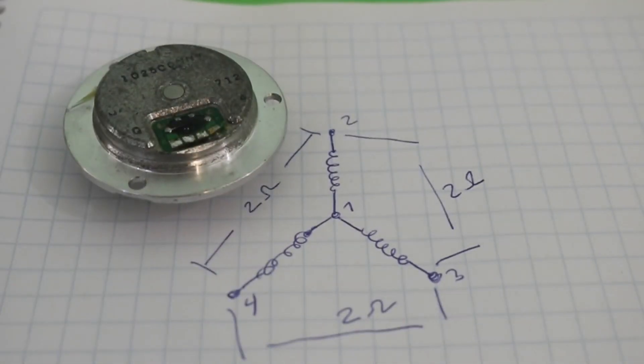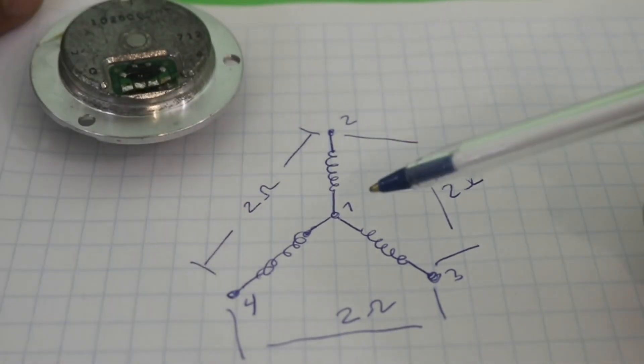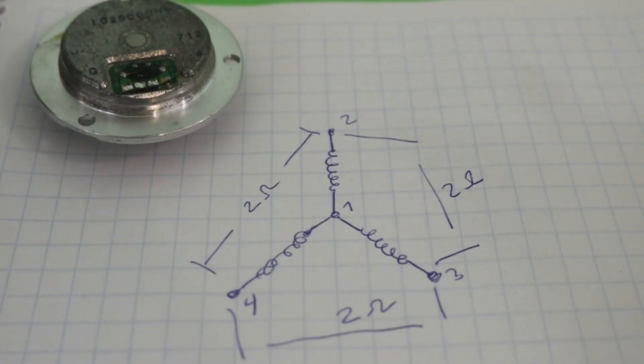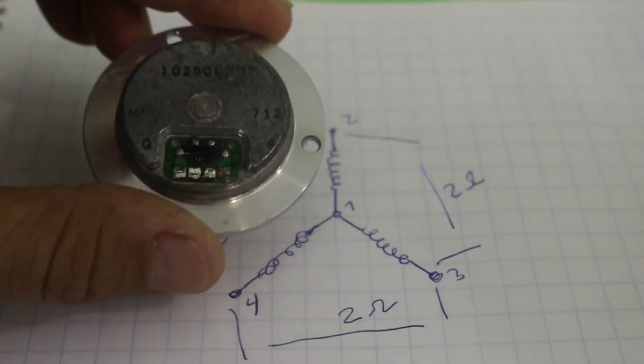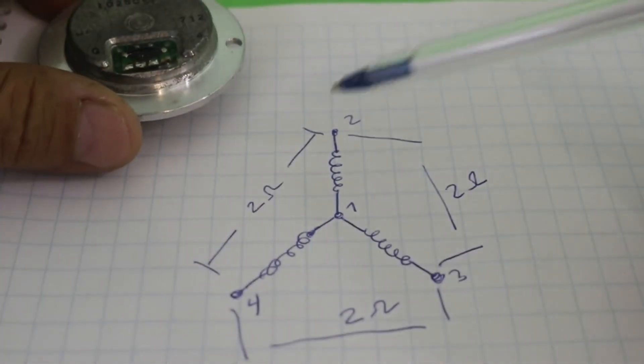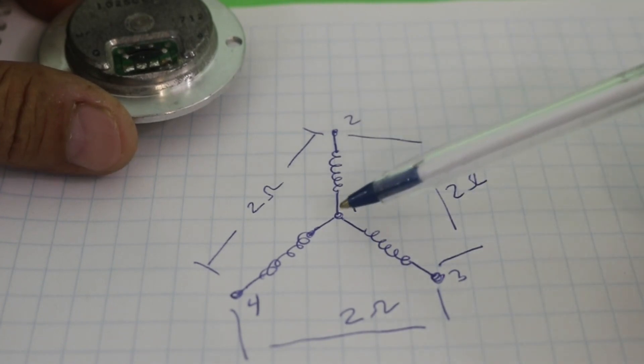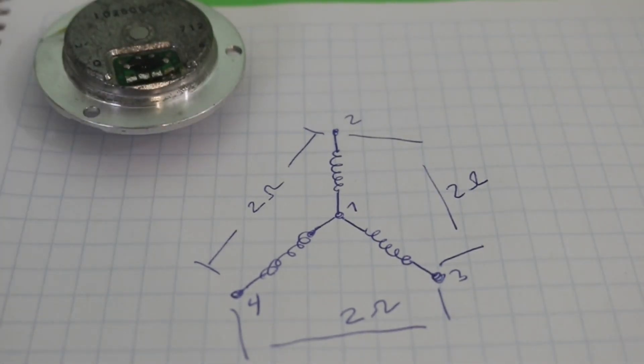Of course, maybe the resistance of a coil is not 1 ohm, maybe 1.5 or 2 ohms, that depends on your particular motor, but you will always get double the resistance between pairs that are not one of the center connection.